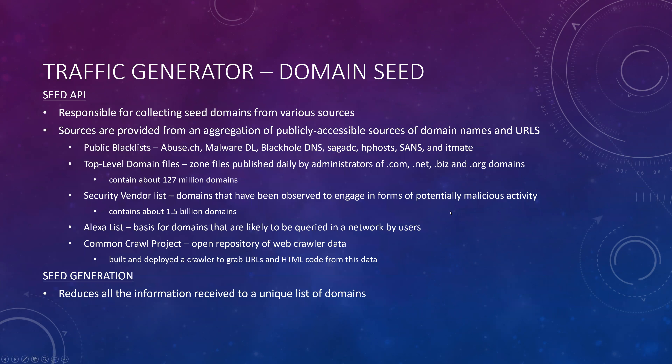The traffic generator is fueled by the domain seed. The seed API is responsible for collecting seed domains from various sources — an aggregation of publicly accessible domain names and URLs. They used public blacklists, choosing about seven of them. They also used the top-level domain zone files published daily by the administrators of .com, .net, .biz, and .org domains.